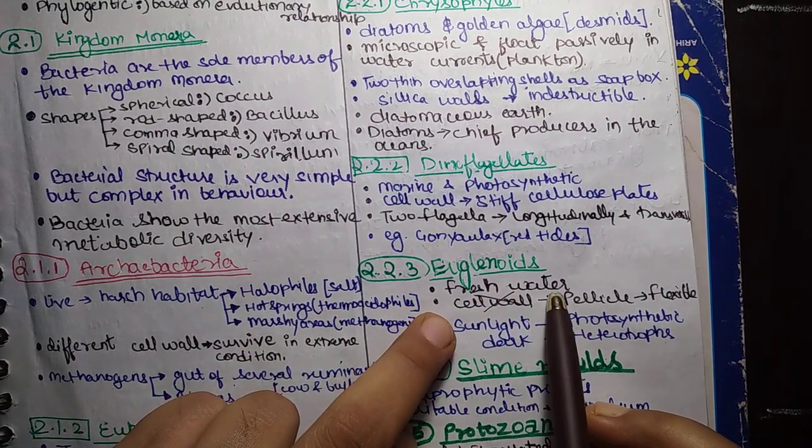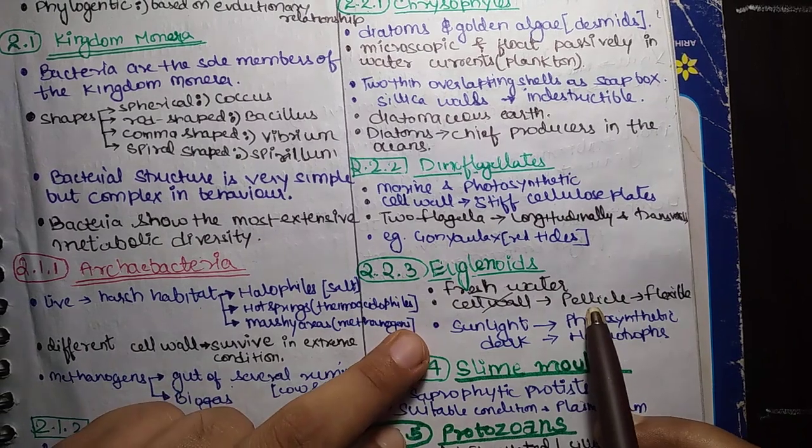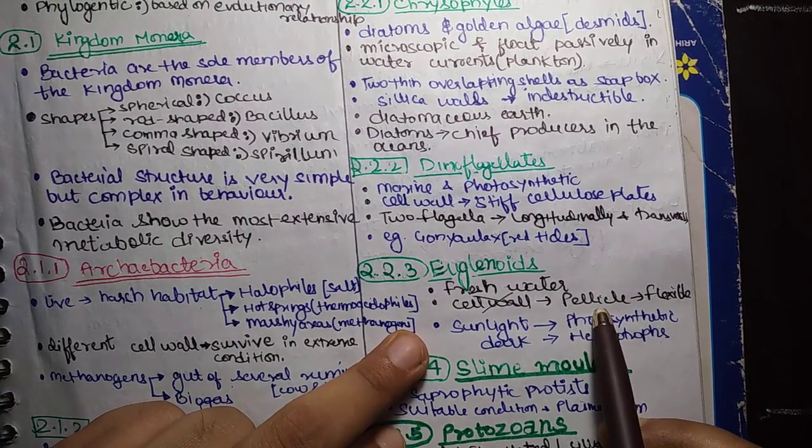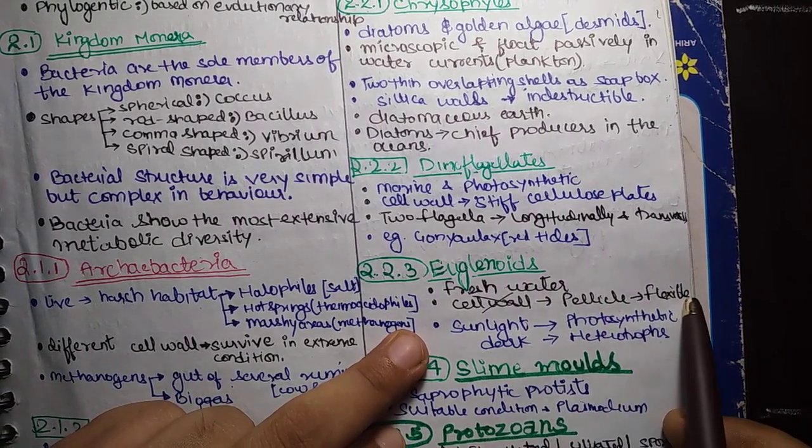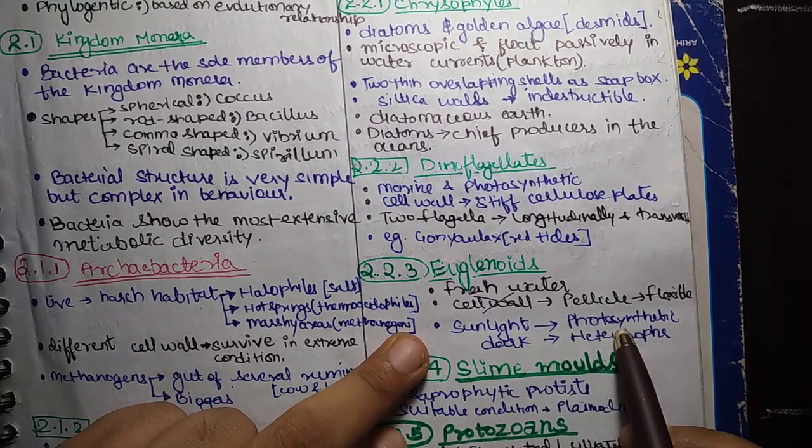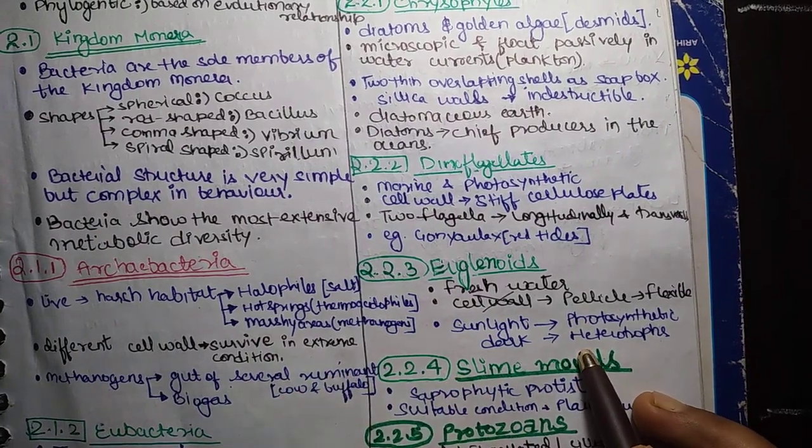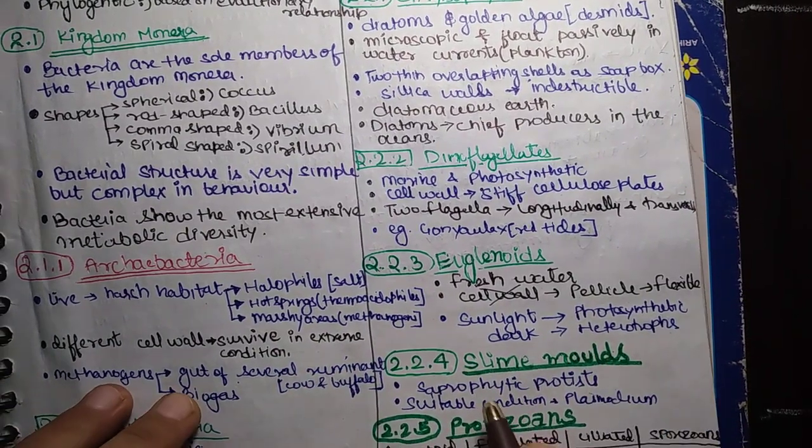The next topic is Euglenoids. These are fresh water. It is not in the cell walls. It is pellicle. It is protein rich layer. It makes Euglenoids flexible. If sunlight is present, then it behaves as photosynthetic. If it is not, it is dark, then it behaves as heterotrophs.